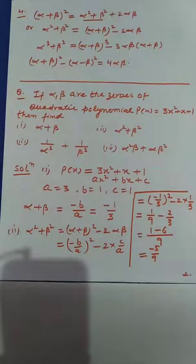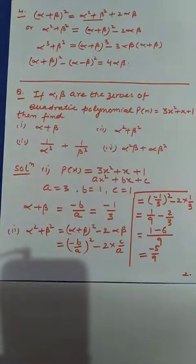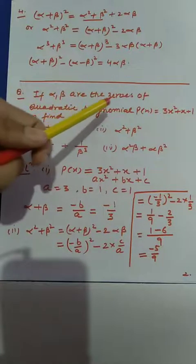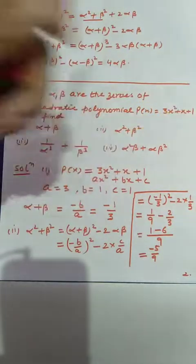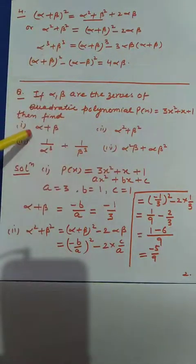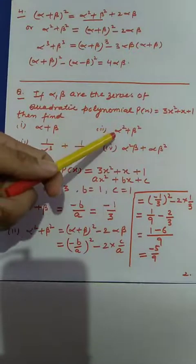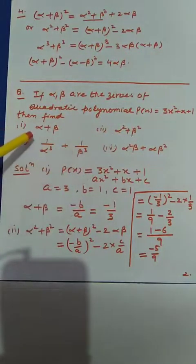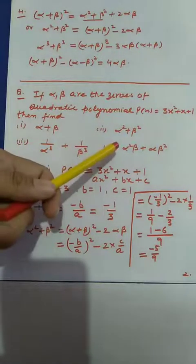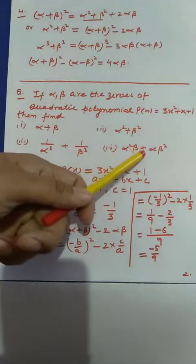Based on these results, now we will solve some questions. The question is: if alpha and beta are the zeros of the quadratic polynomial p(x) equal to 3x² plus x plus 1, then find the values of: (1) alpha plus beta, (2) alpha² plus beta², (3) 1/alpha³ plus 1/beta³, and (4) alpha²·beta plus alpha·beta².